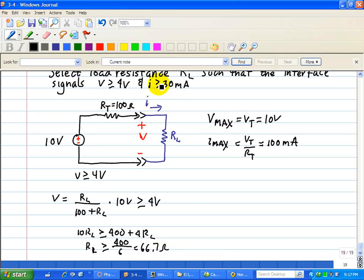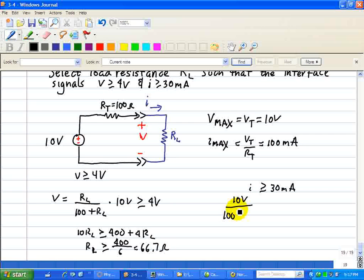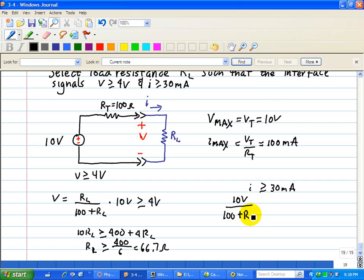Now, the other constraint is I greater than or equal to 30 milliamps. Well, based on this, we have 10 volts, using Ohm's law, divided by 100 plus RL, greater than or equal to 0.03 amps, since 30 milliamps is 0.03 amps.